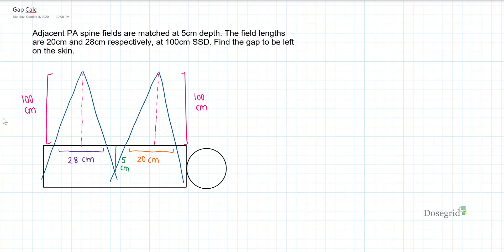To find the total gap, you just add G1 to G2, so you add 0.5 to 0.7, and you get 1.2 cm for your gap.